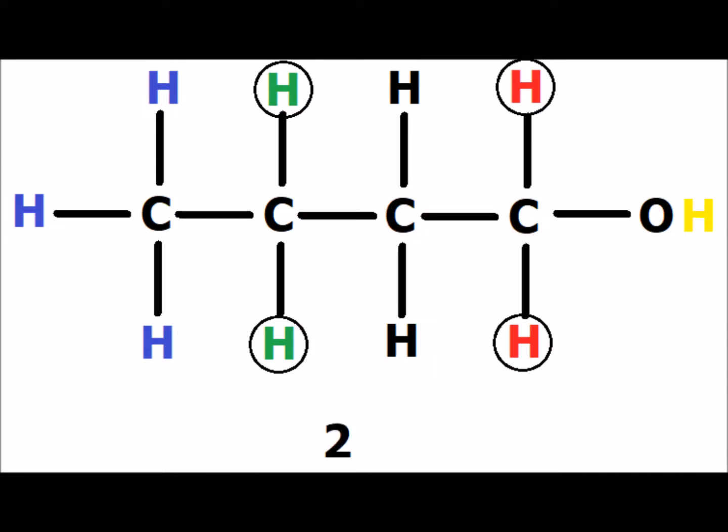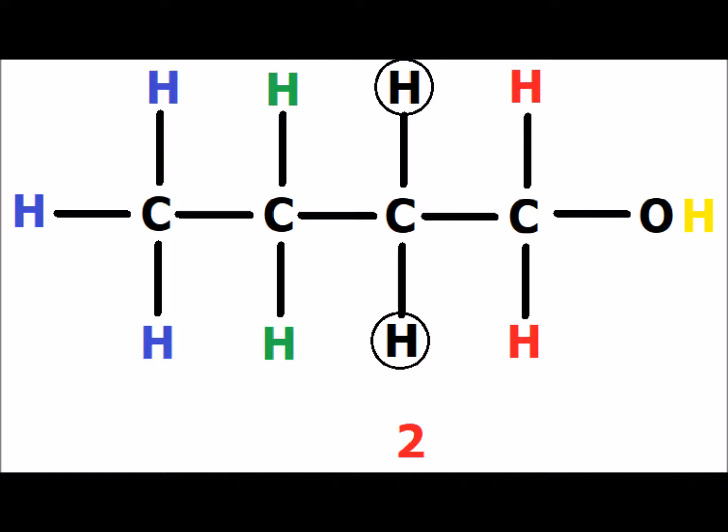The two black hydrogens have four neighbors — the two green hydrogens to the left and the two red hydrogens to the right — again showing that the neighbors can be of different types. Because the black hydrogens have four neighbors, the signal will be a quintet, split into five sub-peaks. The two red hydrogens have two neighbors, the black hydrogens to the left. The yellow hydroxyl hydrogen does not count as a neighbor because it exchanges, so the red signal will be split into a triplet, three sub-peaks.